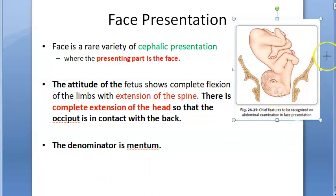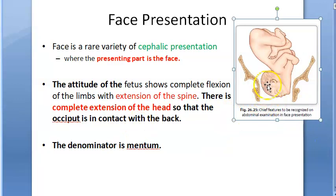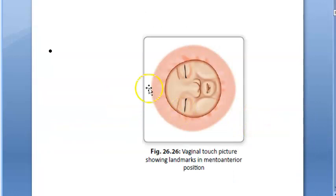The denominator here is the mentum. The bony prominence is the mentum. Mentum is your chin. So this is what is the denominator - the denominator is the mentum. Did you understand the basics of face presentation?